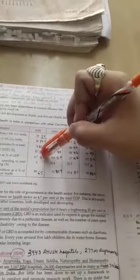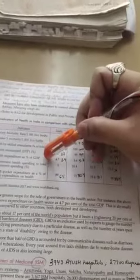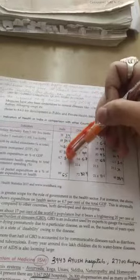There is greater scope for the role of the government in the health sector. Now government has to pay a lot of attention, government expenditure should increase. The table shows that government health expenditure as percent of GDP is 4.7%, but now it's 3.9%. So total GDP's 4.7% we spend, but compared to other countries this is very less.